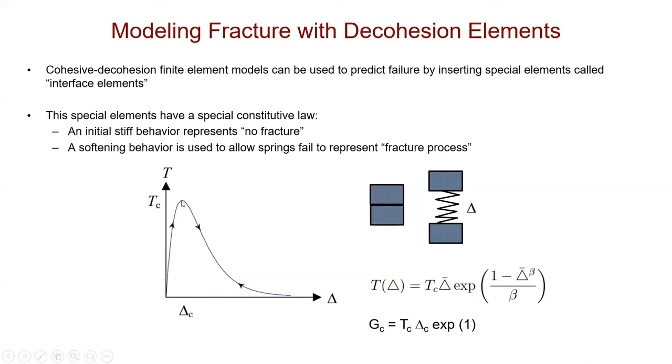As the traction achieves a particular value, at that point in time, you start to see that the delta starts getting easier to separate with decreased load, which means that now things can come apart easier. This spring is going to fracture because it becomes softer. The stiffness is lower and lower until the traction drops to zero and the separation is quite big. This exponential relationship is allowing the spring to fail and become softer over time, allowing it to simulate the fracture process.